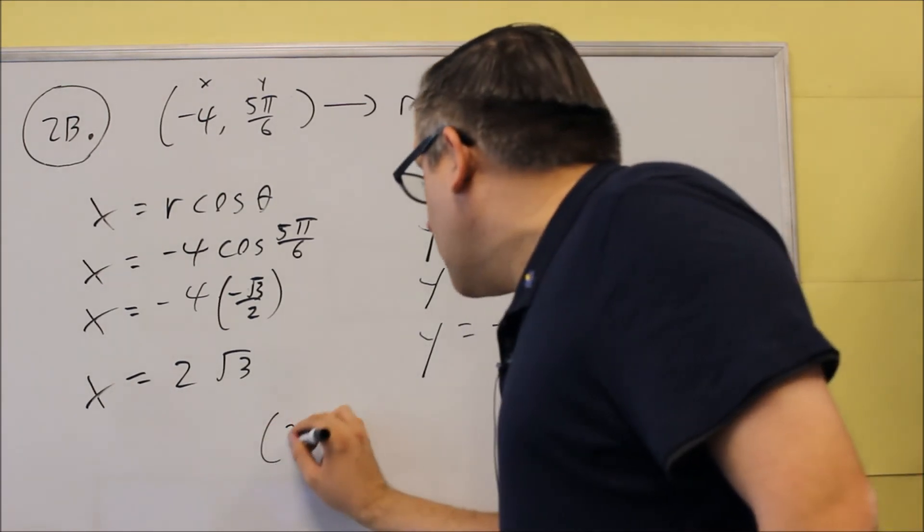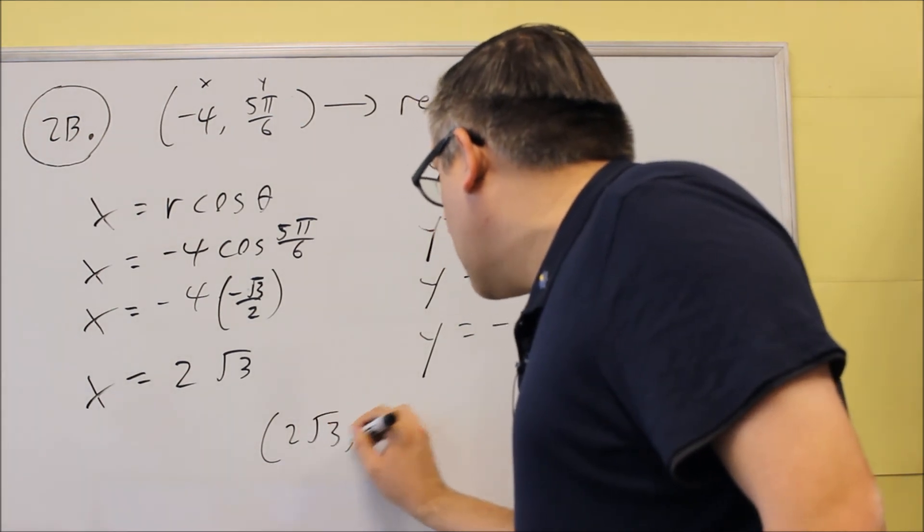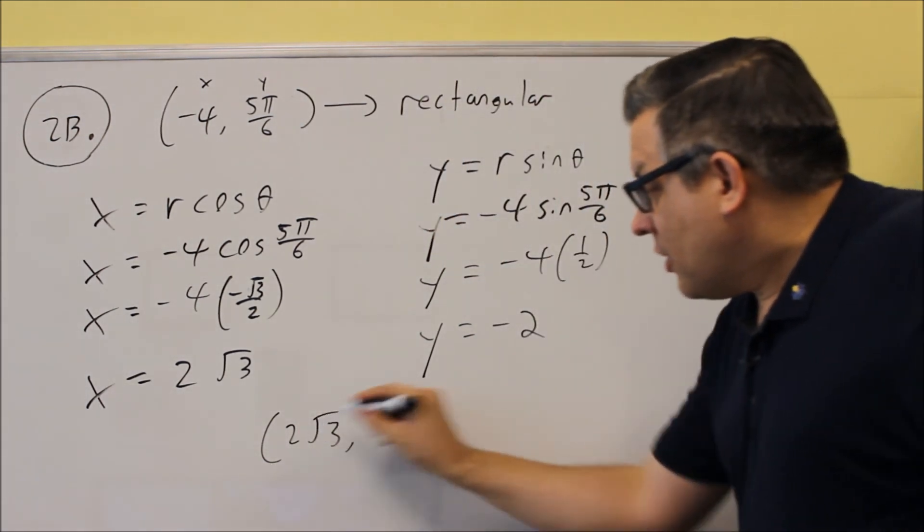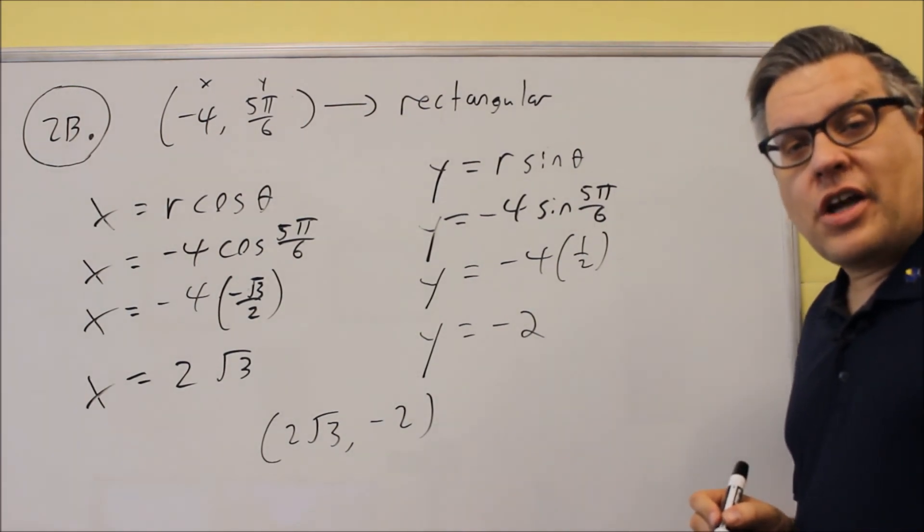So your answer is going to be, you want to make sure you write it as a coordinate, x and y coordinate, 2 square root of 3 and negative 2.